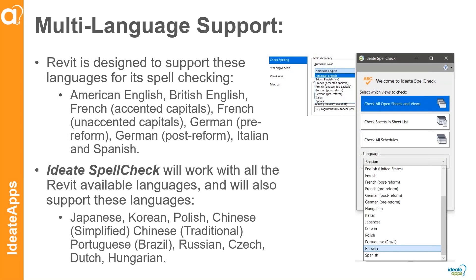With the languages, Revit's Spellcheck engine supports American English, British English, and a few others listed here. But we're also adding Japanese, Korean, Polish, Chinese simplified and traditional, Portuguese, Russian, Czech, Dutch, and Hungarian — for all of those projects you may have around the world.